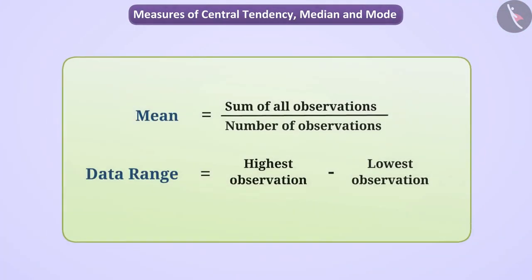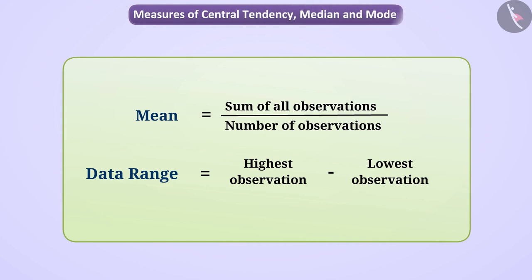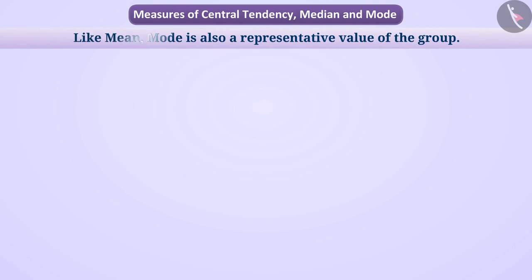We have learned about data range and its mean in the previous video. Let us now understand the other measures of central tendency: median and mode. Like mean, mode is also a representative value of the group.